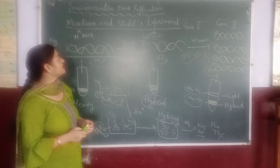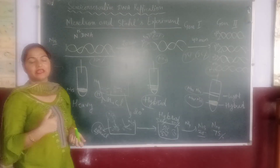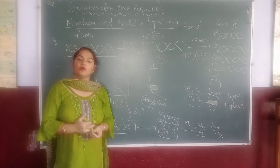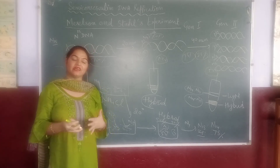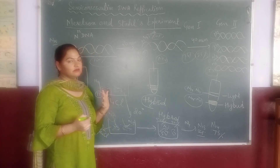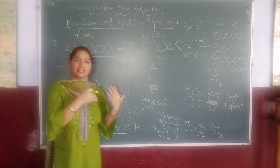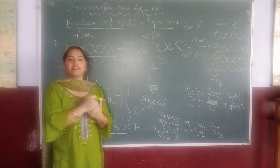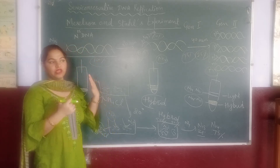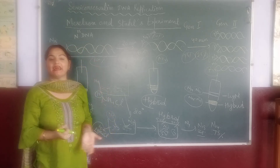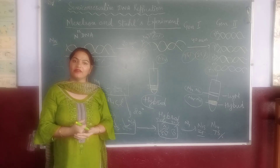Meselson and Stahl found this experiment. Another scientist, Taylor, also gave this experiment. He used heavy nitrogen and thymidine, and he proved that DNA replication is of semi-conservative type.